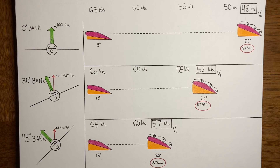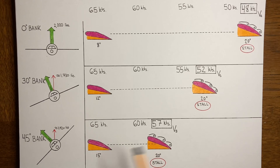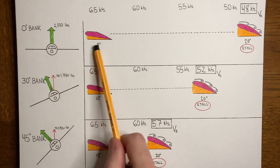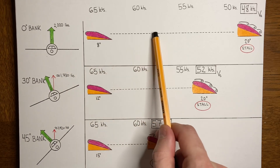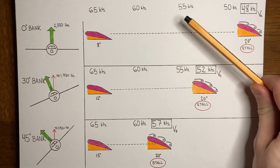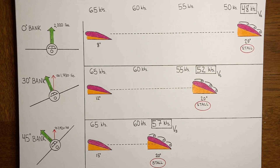So why does an airplane in a bank stall at a higher airspeed? Because as it slows down, it has less angle of attack to play with. It's already started at a much higher angle of attack to make up for the loss of the vertical component of lift. So as you slow down, you don't have very far to go before you hit the critical angle and stall. Whereas wings level, you start from a much smaller angle of attack, so you can slow down quite a bit before the angle of attack reaches the critical angle. That is why the stall speed increases in a turn.